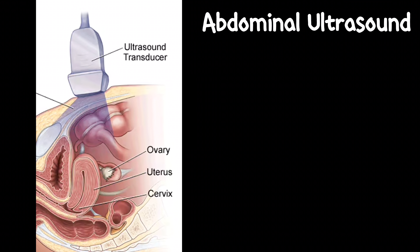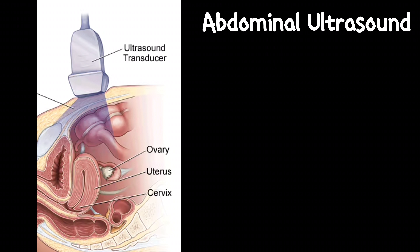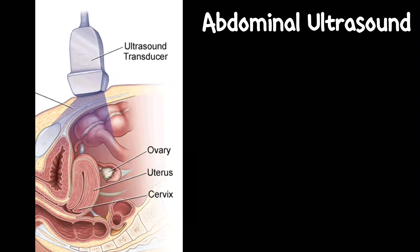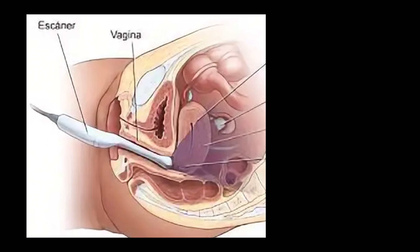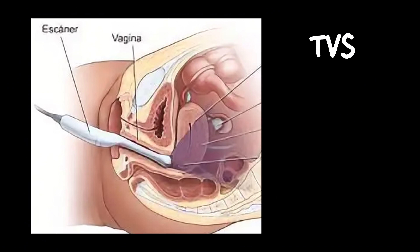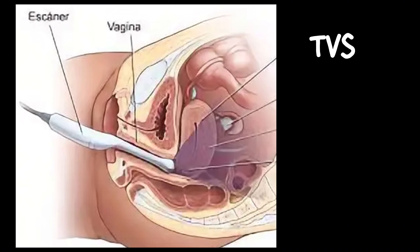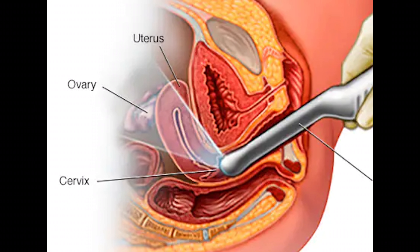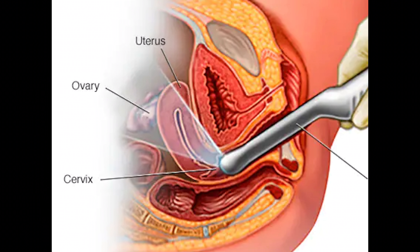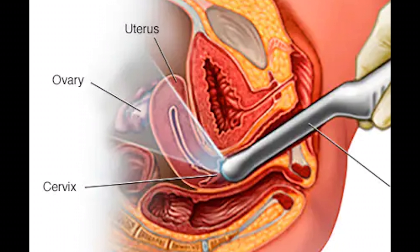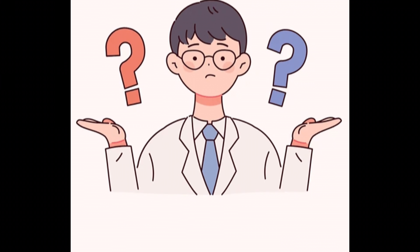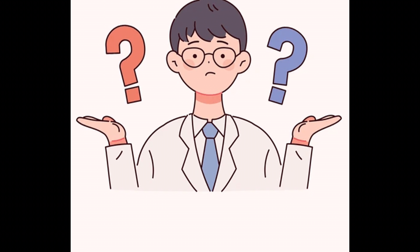Abdominal ultrasound requires a well-distended urinary bladder, and has limitations in visualization with excessive bowel gases or excessive fat. Transvaginal ultrasound involves inserting a probe into the vagina to obtain a clear view of the uterus, adnexa, and ovaries. Unlike abdominal ultrasound, transvaginal ultrasound does not require a full bladder, but has a limited field of view.